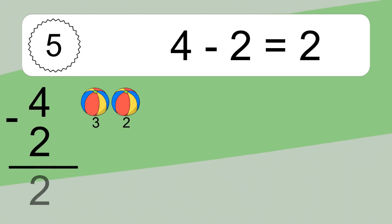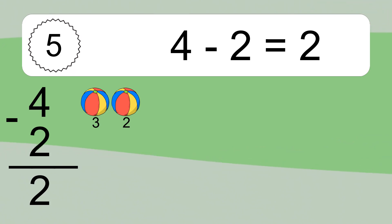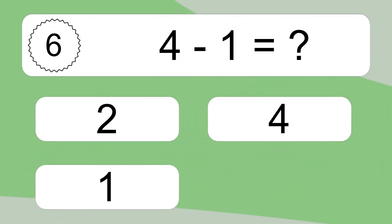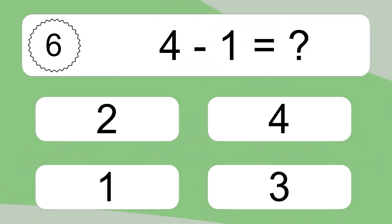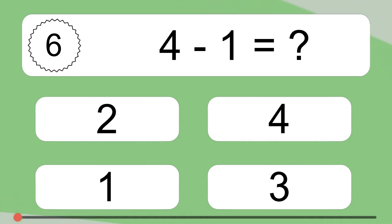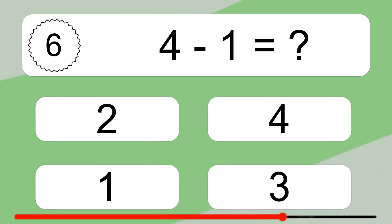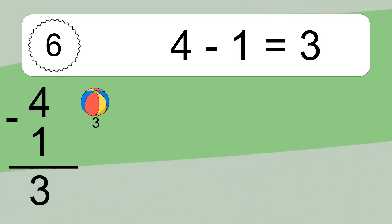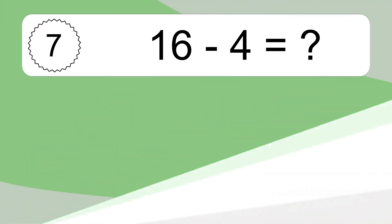4 minus 2 equals what? 4 minus 2 equals 2. Let's count it: 3, 2. 4 minus 1 equals what? 4 minus 1 equals 3. Let's count it: 3.